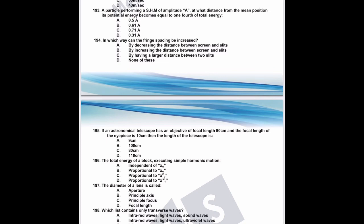Question 194: how can fringe spacing be increased? The formula is Δx = λL/d. Fringe spacing is directly proportional to L (distance between screen and slits) and inversely proportional to d (distance between slits). To increase fringe spacing, increase the distance between screen and slits. The correct answer is B.